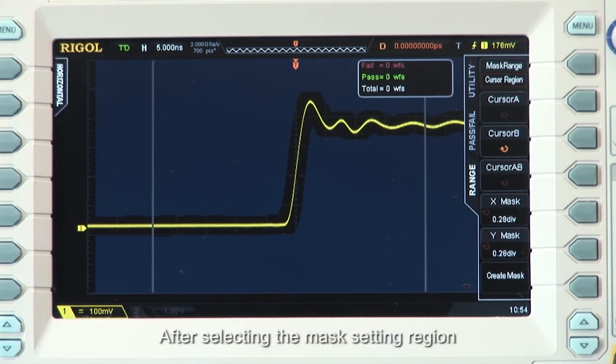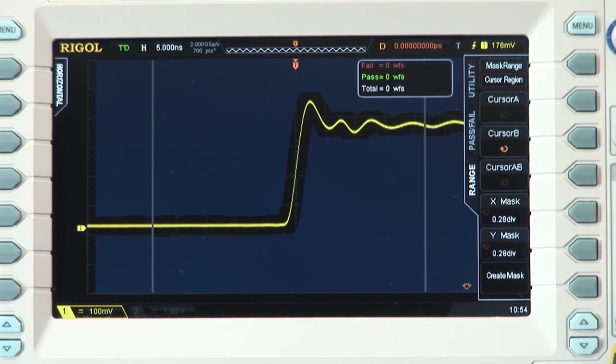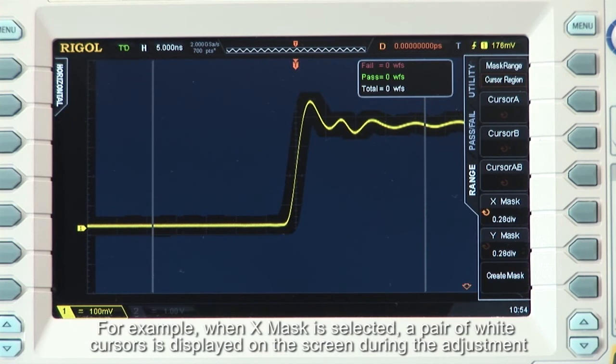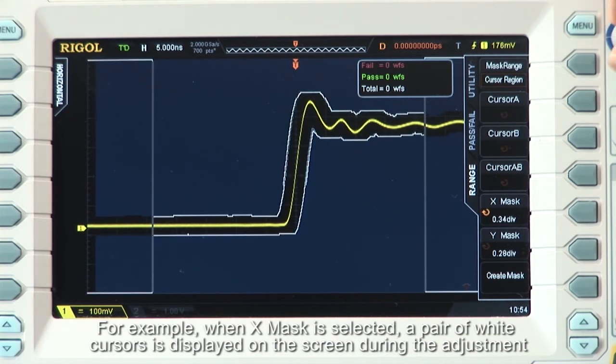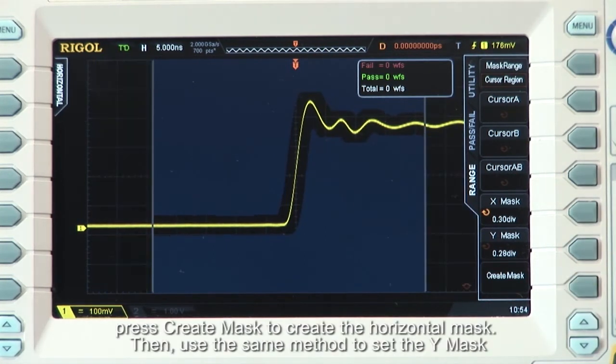After selecting the mask setting region, set the mask range using X mask and Y mask controls. For example, when X mask is selected, a pair of white cursors are displayed on the screen during the adjustment. After adjusting the cursors to the proper positions, press Create Mask to create the horizontal mask.